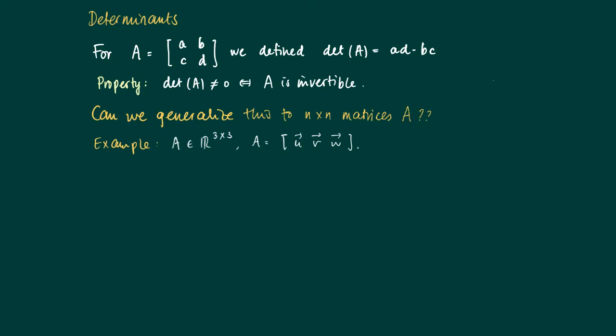So consider an example of a three by three matrix A with columns U, V, W. Then of course we have two cases: one is A is not invertible, and the second is that A is invertible.